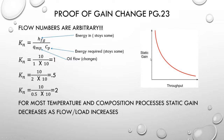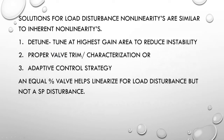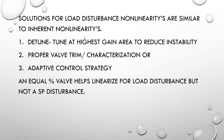So how do we deal with these load disturbances and changing gains? The solutions are similar to what we've looked at for inherent non-linearities from equipment, process, and valve. We have the same options: we can detune — tune at the highest gain area to reduce instability across the board at the expense of possible sluggishness in some areas. Second option is proper valve trim and characterization. Third option is adaptive control strategies. The same strategies can be applied whether we're talking about inherent equipment characteristics or process load disturbance characteristics.